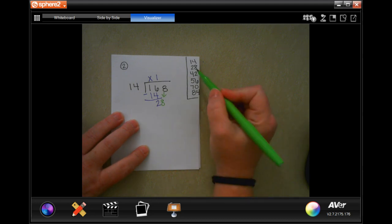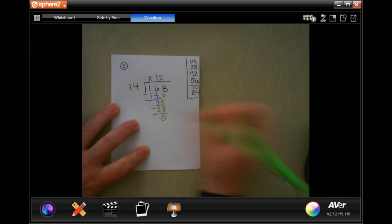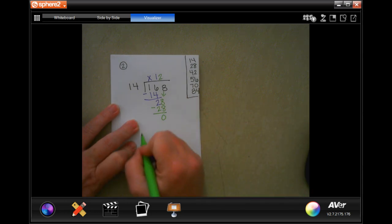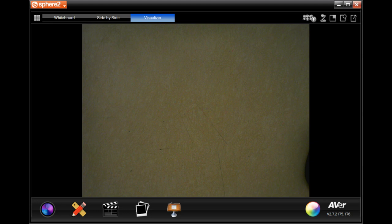As we can see over here, 14 goes into 28 two times. 2 times 14 is 28. I subtract. I get 0. My answer is 12. Pause it. Show your work. Make sure that you're showing your work, it's important, guys.